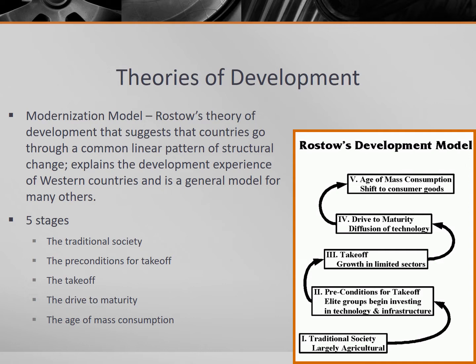But there are limitations and criticisms of this theory as well. One major issue with Rostow's model is that it argued that countries proceed along this development path in isolation from one another. But in our increasingly globalized world, countries are highly interconnected and interdependent on one another. In addition, it doesn't address that many countries that are less developed are that way because they were colonized and intentionally underdeveloped by many of the same countries that Rostow bases his model on. So, periphery countries have significant barriers to development that early starters did not have.